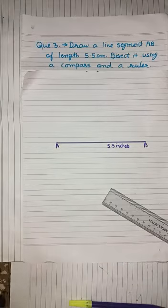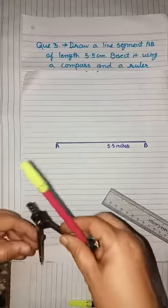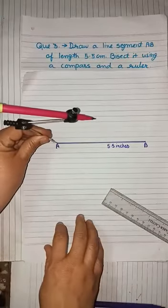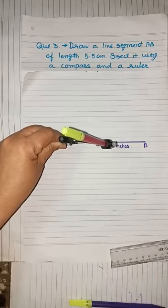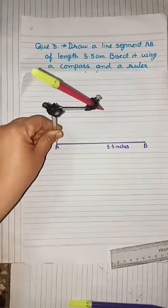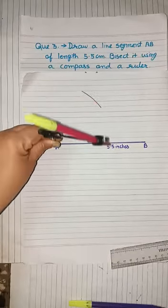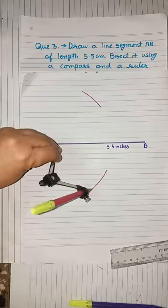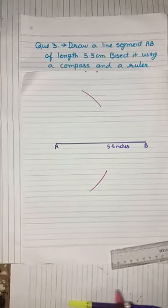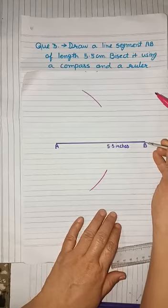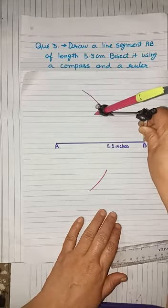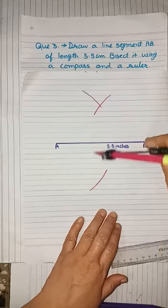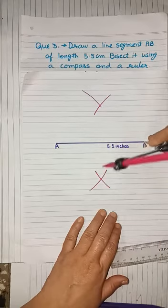Now students, you have to use compass here and keeping the still point of the compass on point A and taking the distance which is greater than half of line segment AB, you have to draw two arcs, one above and one below line segment AB. Now again, keeping the distance same and now keeping the still point on point B, you have to draw two arcs which intersects the previous arcs.